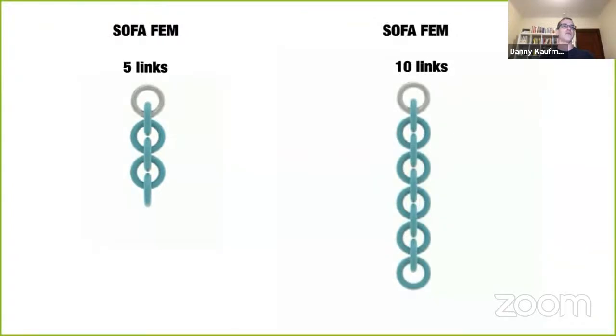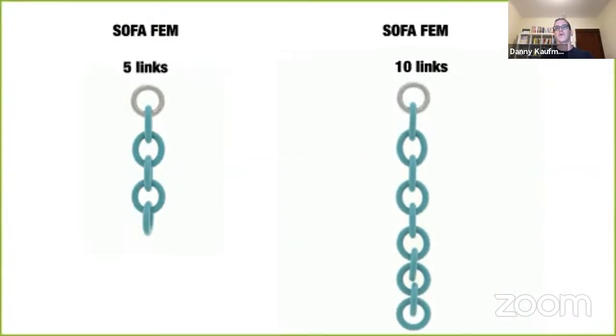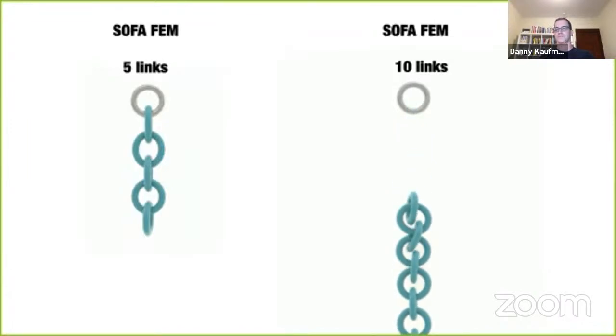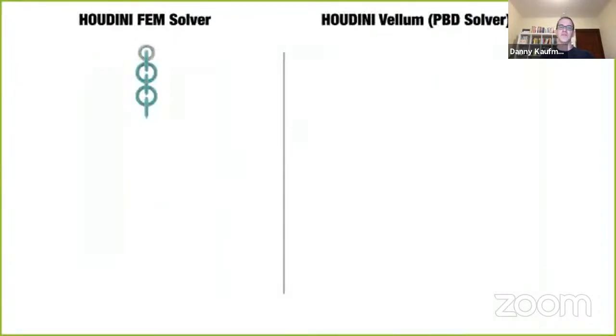So we can start by looking at SOFA. And SOFA to my knowledge is one of the most robust and performant open source soft body solutions that we have in graphics. And if we take a look on the left here, for five links, we get a nice solution, maybe a little bit too oscillatory, but overall really acceptable. But now on the right, if we take exactly the same simulation setup, same config, same everything, just add a few more links. This is the result we get. So nothing's really changed, just the geometry.